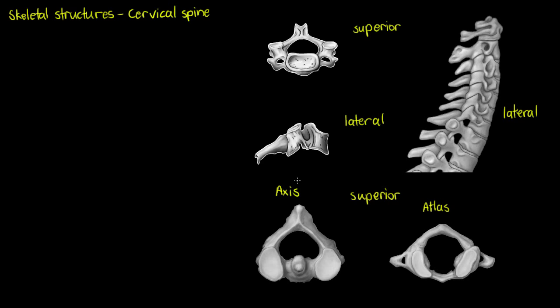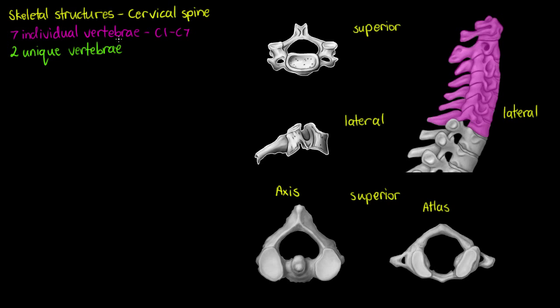We have the atlas and the axis, and we'll talk about those more in depth in just a moment. Whether you want to use the term 'cervical' or 'cervical' doesn't really matter all that much, as long as you know what you're talking about. Some people get confused and think it's in relation to the cervix, so if you want to use 'cervical' to avoid that confusion, I would recommend that. The first thing we want to know is that we have seven individual vertebrae, C1 to C7, and the two unique vertebrae will be our C1 and C2.